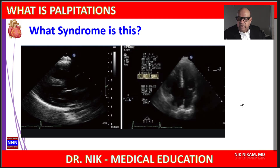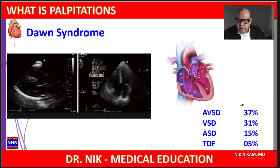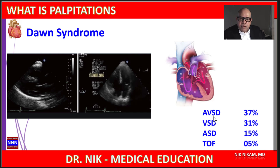What syndrome does this represent? Take a good look at both pictures — these are two-dimensional echocardiogram images. This is an example of Down syndrome, characterized by atrioventricular septal defect, which is the most common form of congenital cardiac malformation seen in patients with Down syndrome.